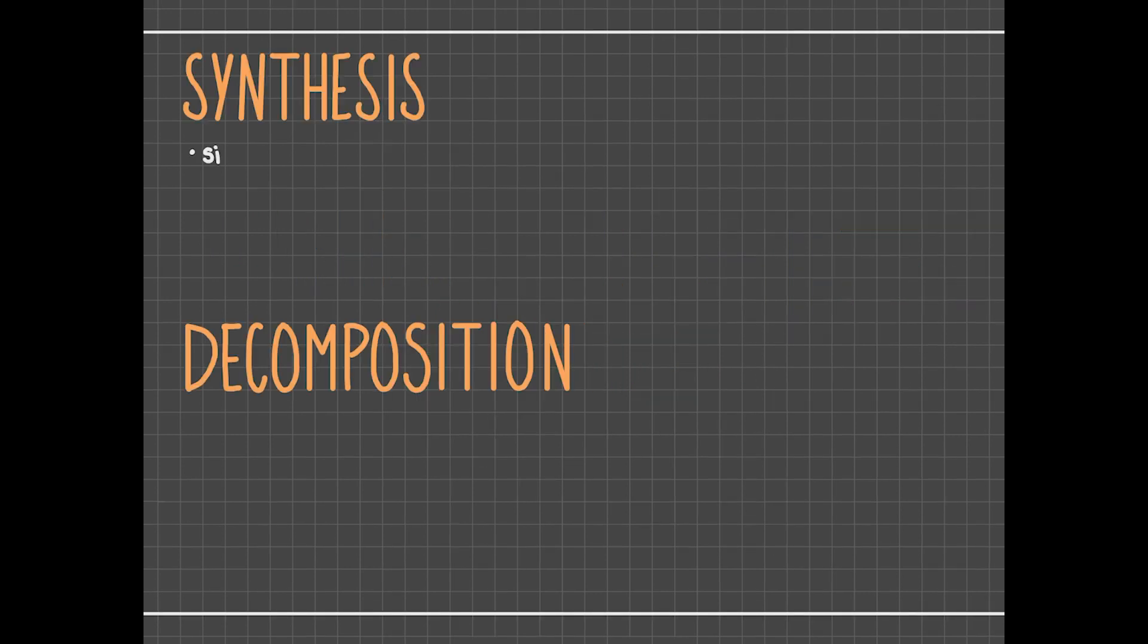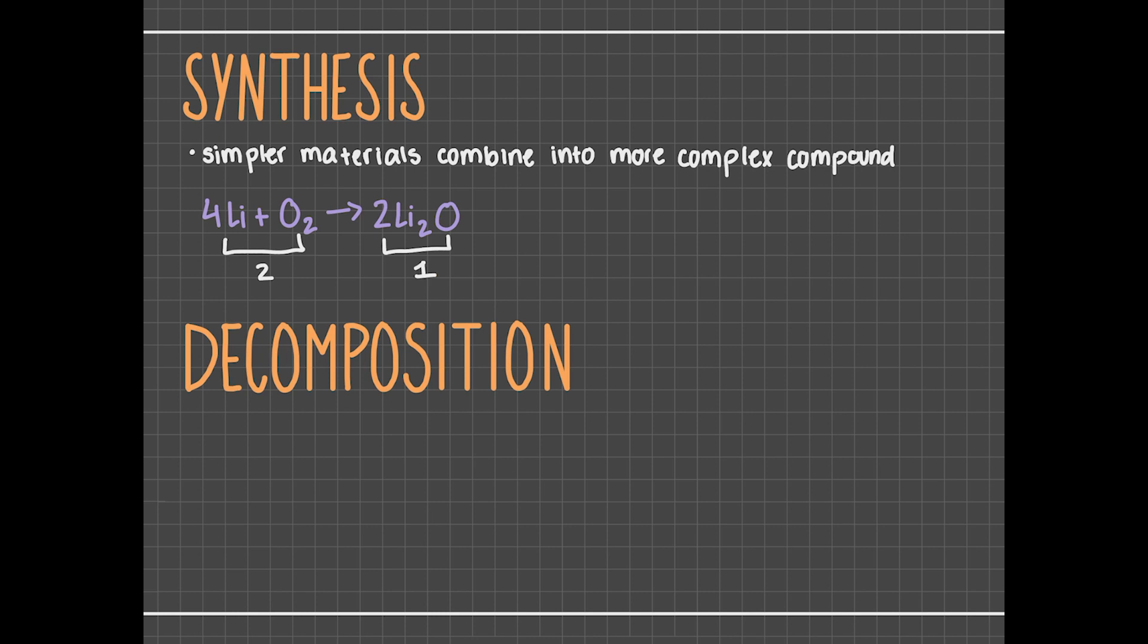The first reaction we'll cover is a synthesis reaction. The word synthesize means to combine, and that's exactly what's happening in this kind of reaction. We start with some simple materials which combine to make a more complex compound. For example, let's look at the reaction between lithium and oxygen. Solid lithium and oxygen gas come together to form one compound, lithium oxide, so the reactants are synthesizing to make one product.